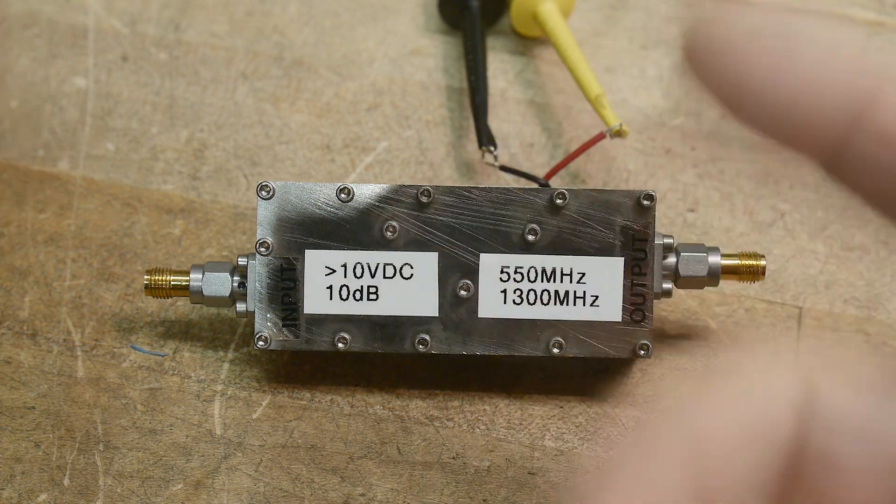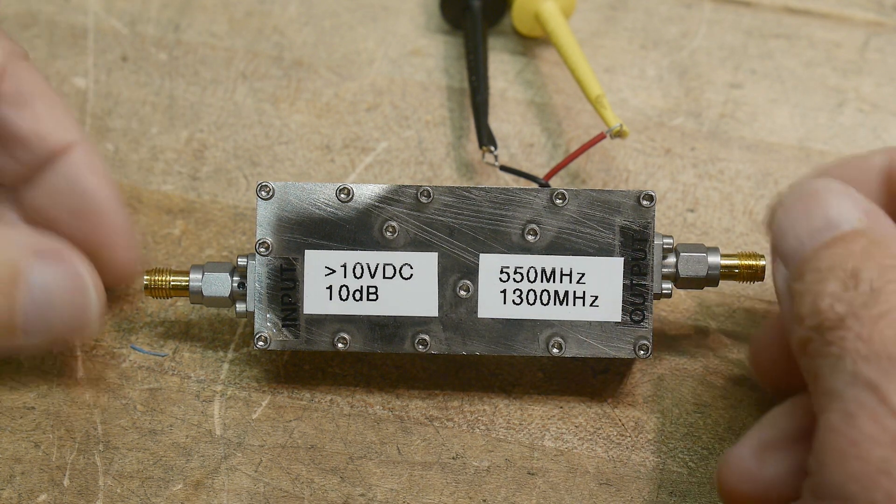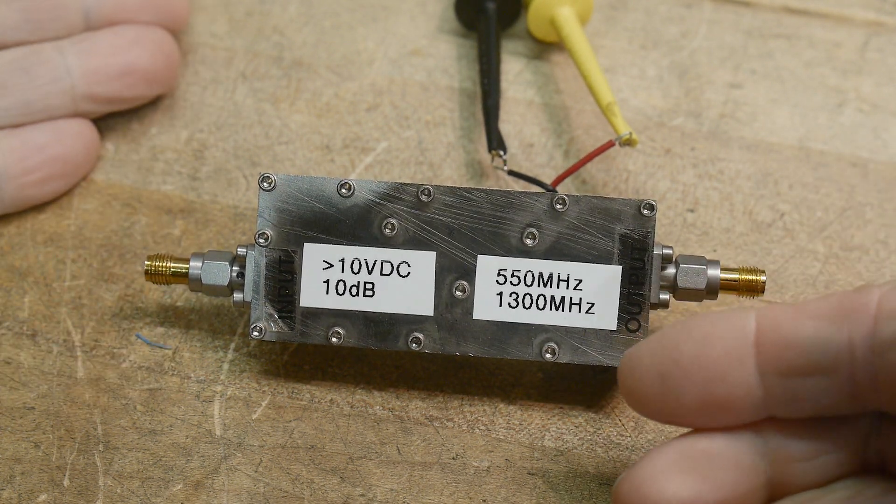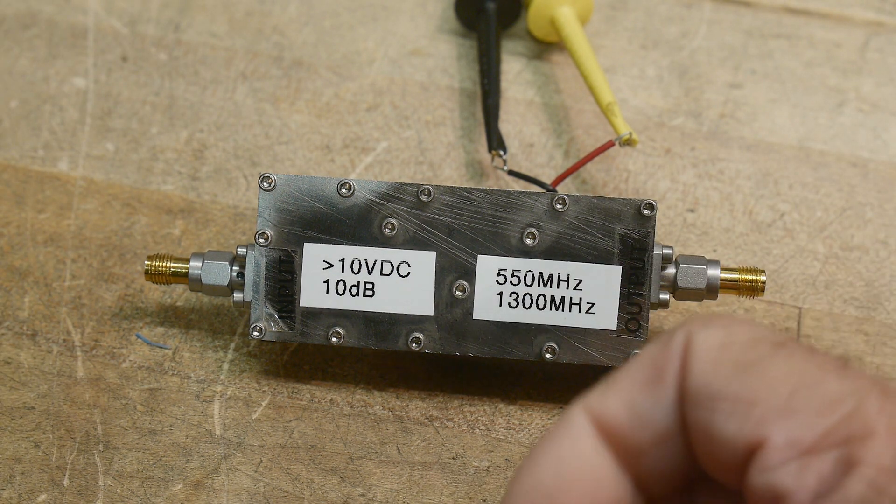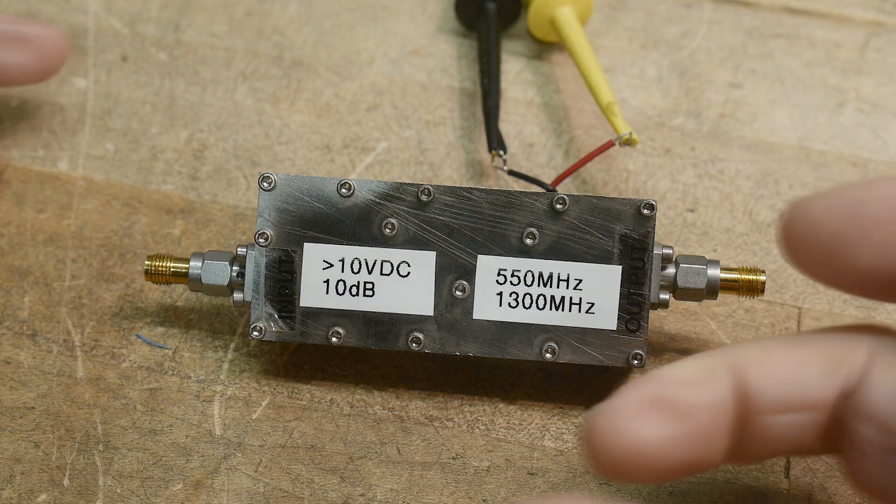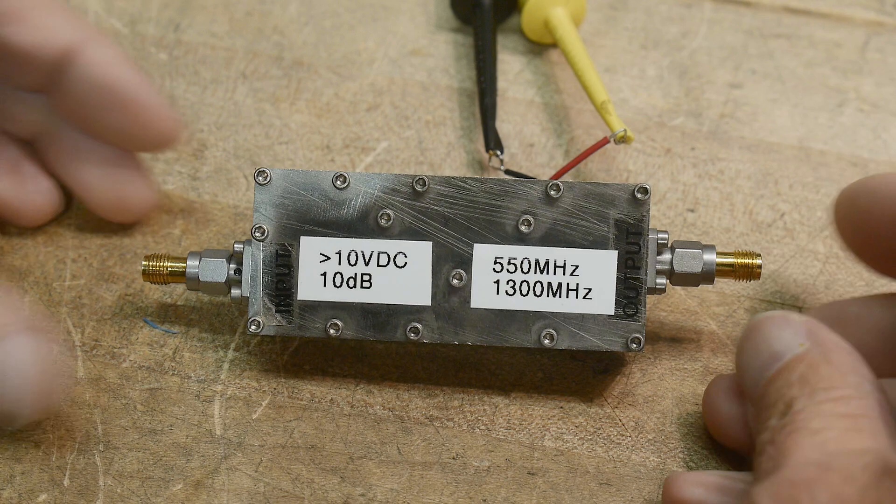If you're new to the channel, I seem to be getting quite a few more subscribers. I want to show you measuring an active device. I've showed measuring a filter and an attenuator, those are passive devices. This is an active device. It requires voltage and has amplification.